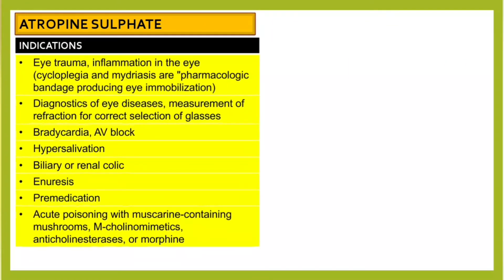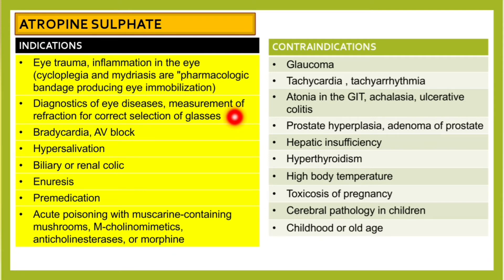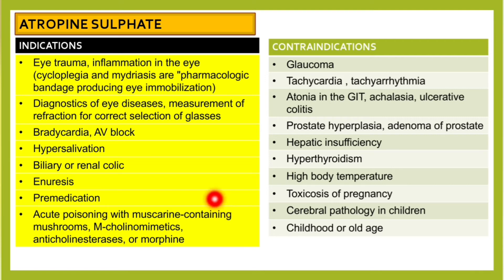Indications for atropine sulfate include eye trauma and inflammation, where it acts as a pharmacologic bandage by producing eye immobilization through cycloplegia and mydriasis. It is used in diagnosis of eye diseases and measurement of refraction for glasses selection, bradycardia, AV block, hypersalivation, biliary or renal colic, enuresis, pre-medication before surgery, and acute poisoning with muscarin-containing mushrooms, M-cholinomimetics, anticholinesterases, or morphine.